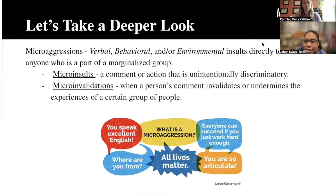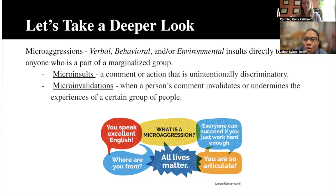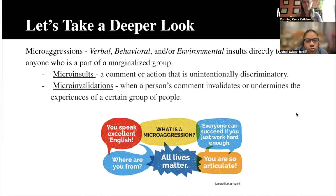Examples of microaggressions include: 'You speak excellent English,' 'Where are you from?' 'All lives matter,' 'Everyone can succeed if you work hard enough,' and 'Oh, you're so articulate.' These are all microaggressions. While there may be good intention behind them, it's really a subtle interaction communicating a bias. You don't have to be part of a certain group to understand that something is unjust. It's about learning how to be empathetic and aware of a person's history and context.